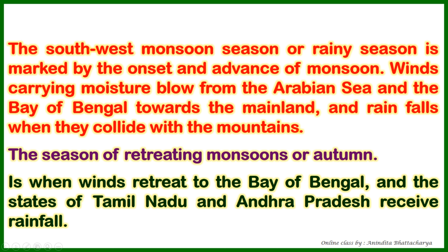During the southwest monsoon, the winds blow from water bodies to the land — specifically through the Arabian Sea branch and the Bay of Bengal branch. The monsoon is categorized into these two branches moving from the sea to the mainland. When the wind path meets an obstacle like a mountain, plateau, or hill, the wind is blocked and rain falls. This type of rainfall is also called orographic rainfall.